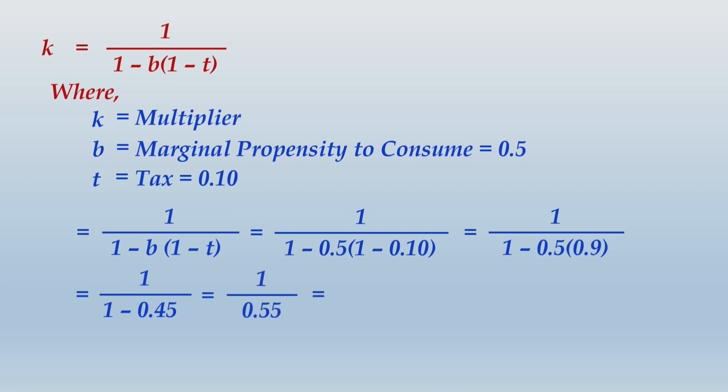So 1 minus 0.45 in the denominator will give you 0.55, so 1 divided by 0.55 will be the value of multiplier that comes to 1.818181 recurring. While writing up the solution earlier we have rounded it off to 1.82. Rounding off or not is up to you, but whenever you are not rounding off, see what I have done, dot dot dot indicating that it's a recurring figure. If you write it as 1.82, make sure you know that it is an approximate value.